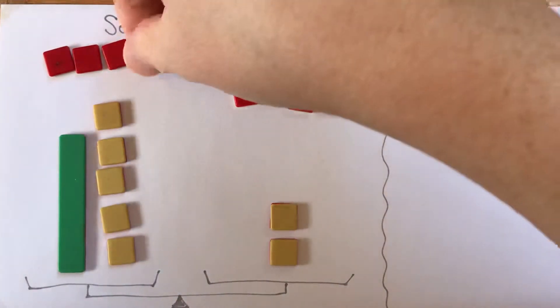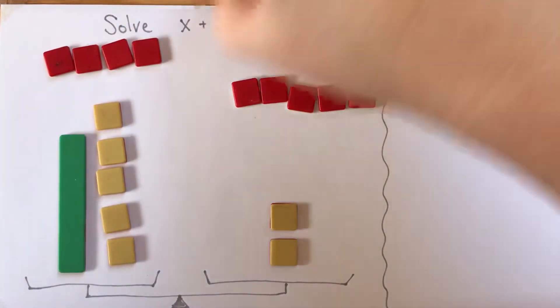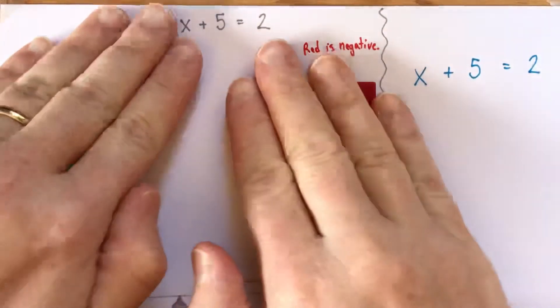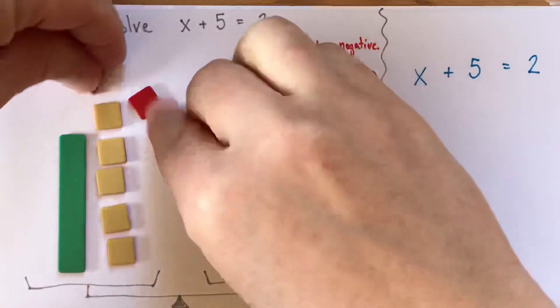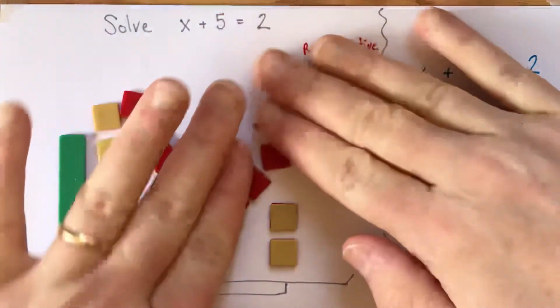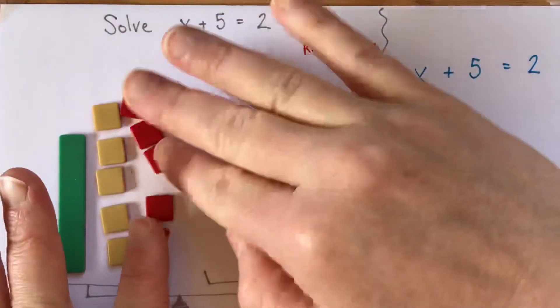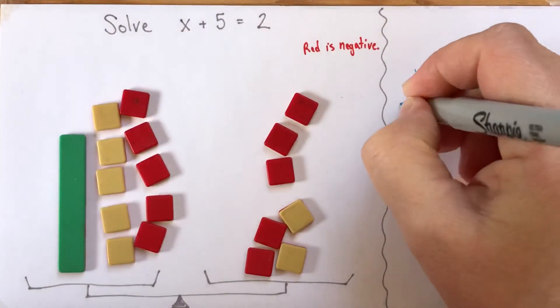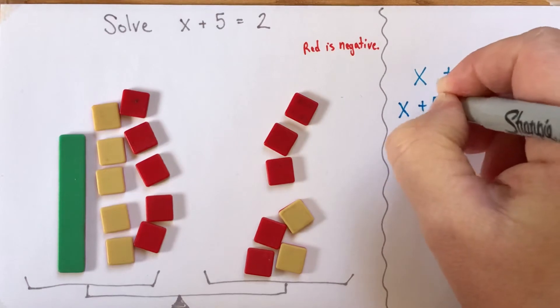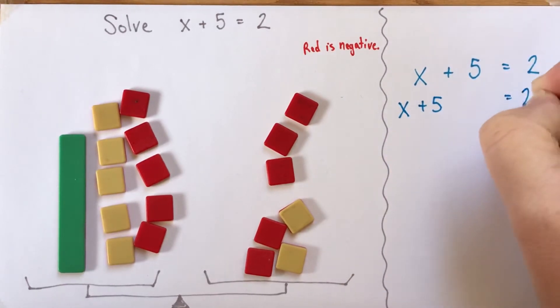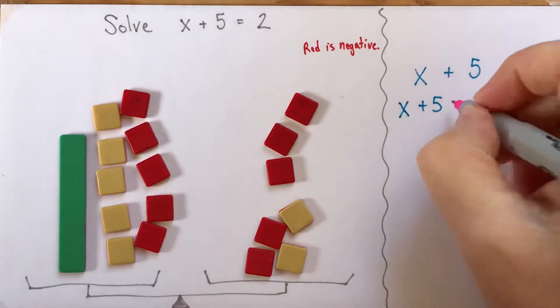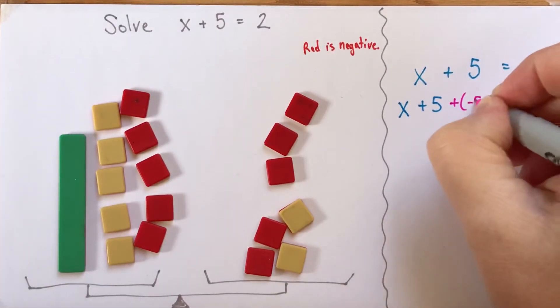and then add it at the same time, just to make sure I don't forget to do anything. So here's plus negative 5 and plus negative 5. So we'll write down here what we did. We had x plus 5 equals 2. And what we did, we added negative 5.